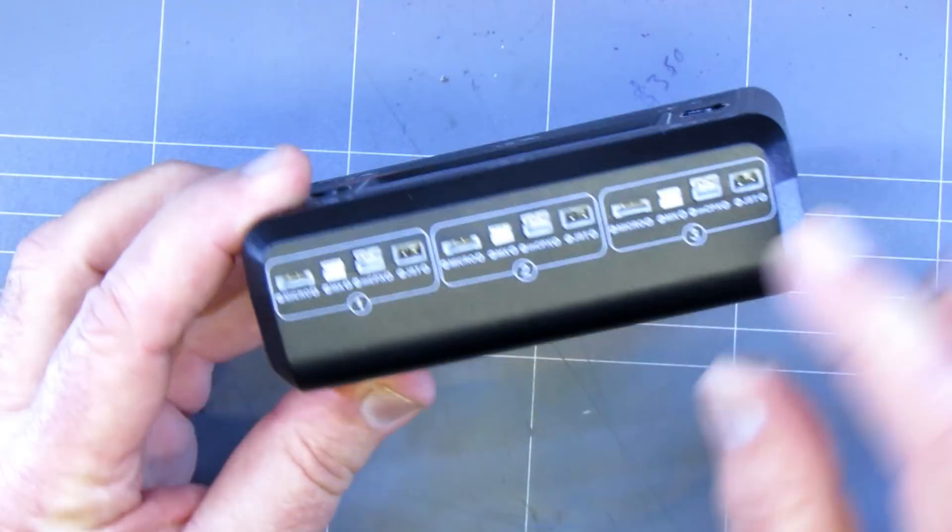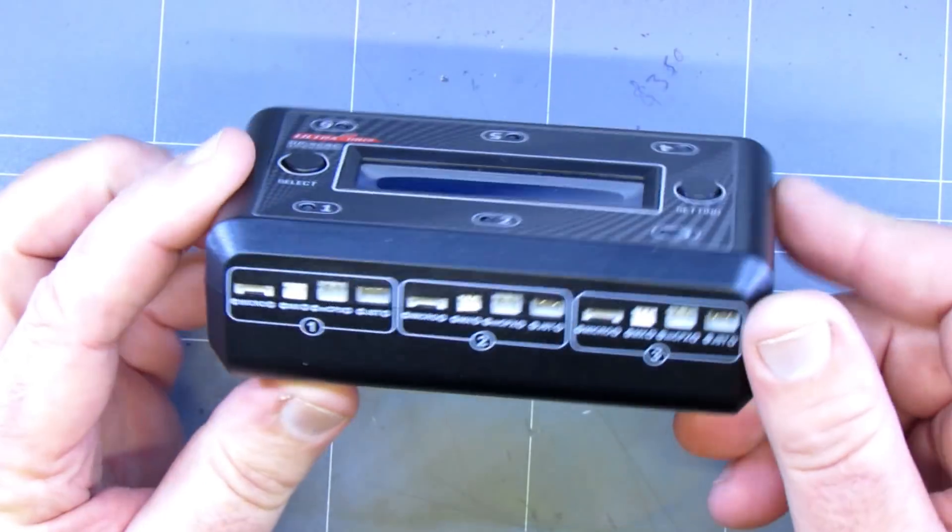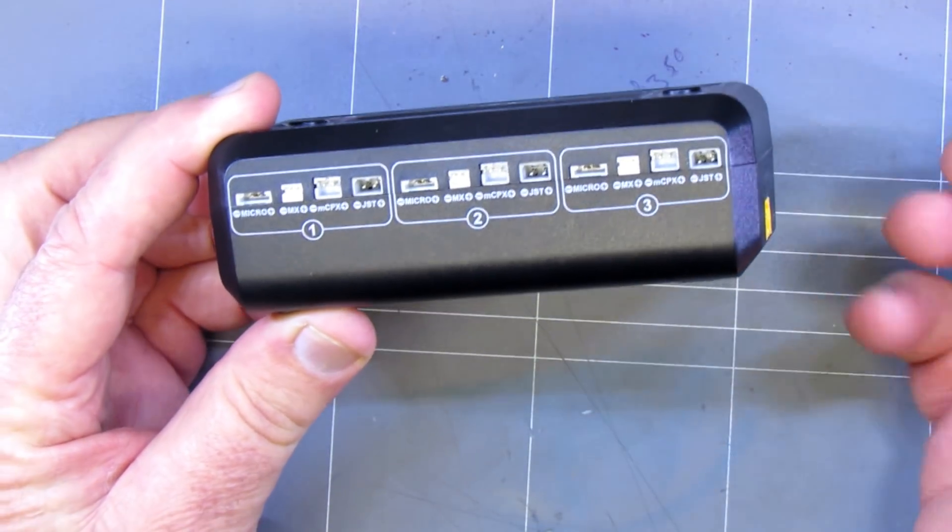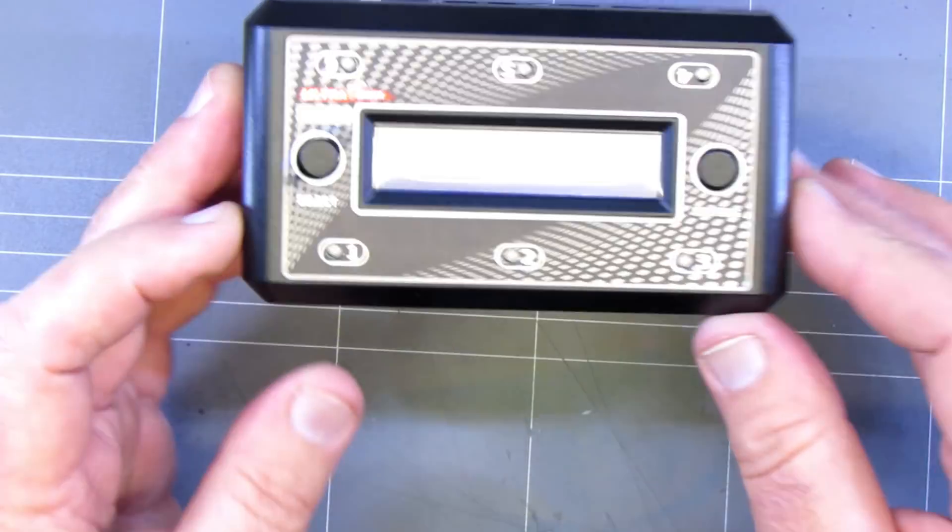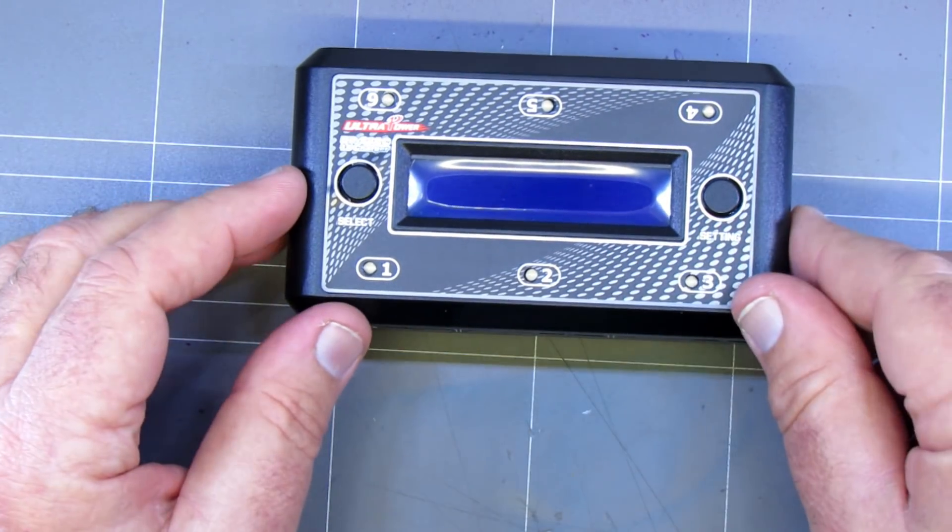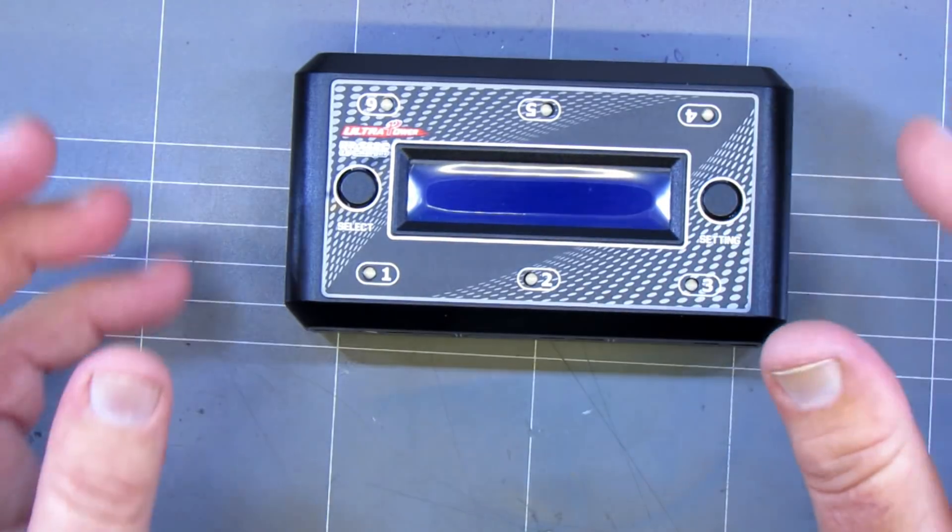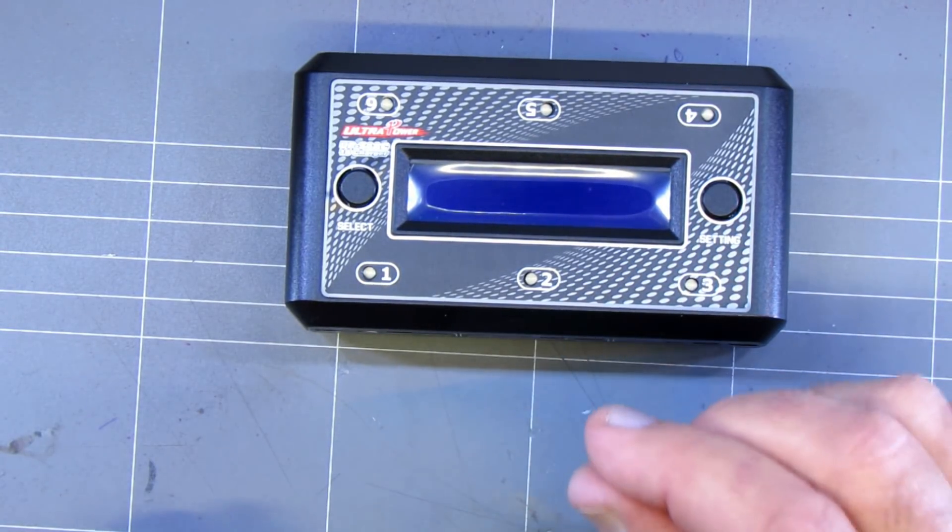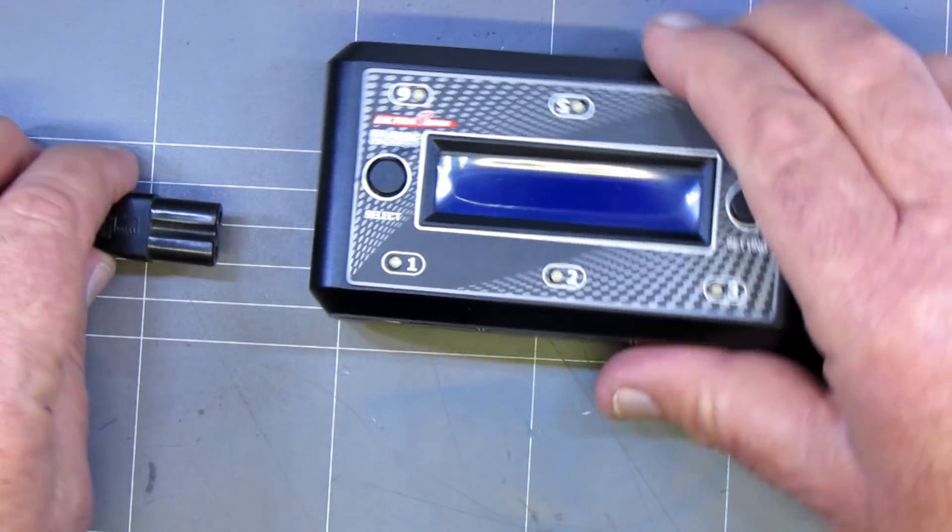It's got 6 independent ports each side with 4 different connectors. You've got your Micro, MX, MCPX and your JST sockets. You've got a nice little status bar here which I'll flash on the screen in a second. It has adjustable current per each port so what that means is it'll charge from 0.1 amp to 1 amp on each port. We'll plug this little thing in.